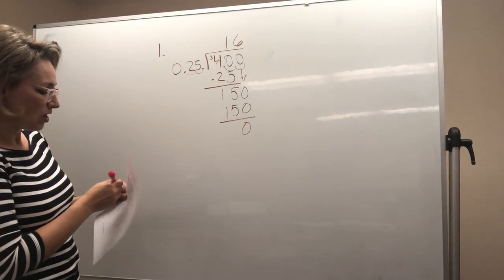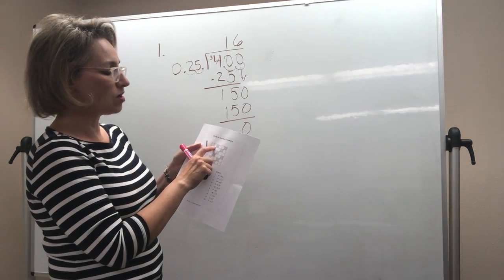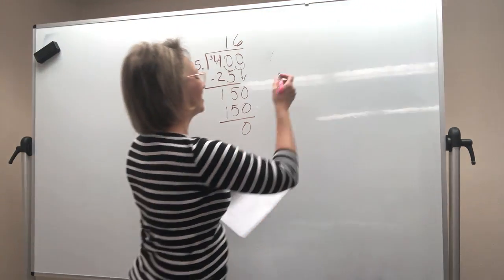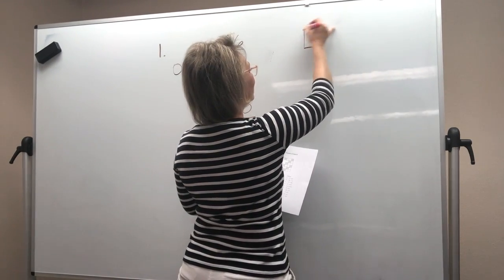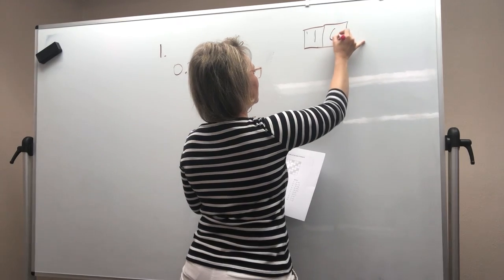So the answer is 16. So on your crossword puzzle, you're going to go to the 1 across and you're going to write in those boxes that look like this at the top and there's a little 1 in there. You're going to write 16.